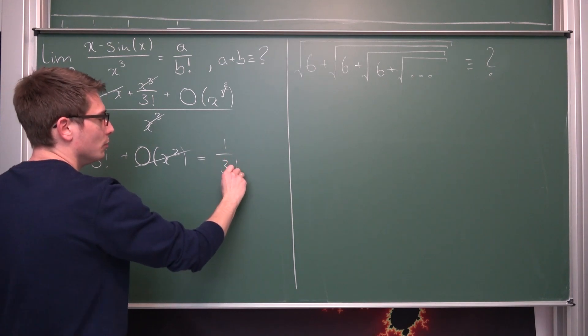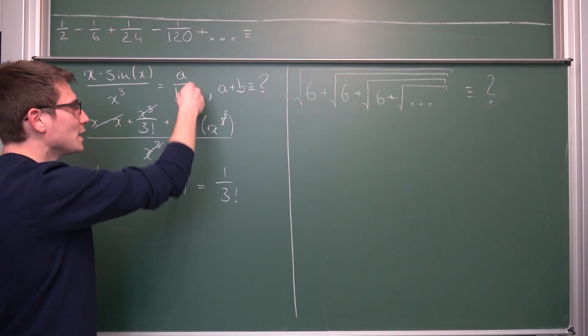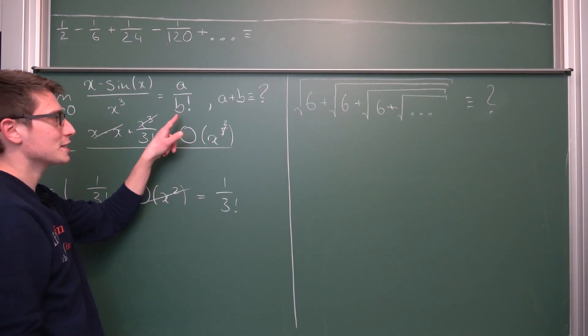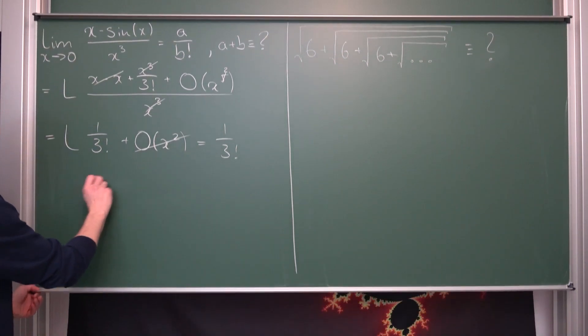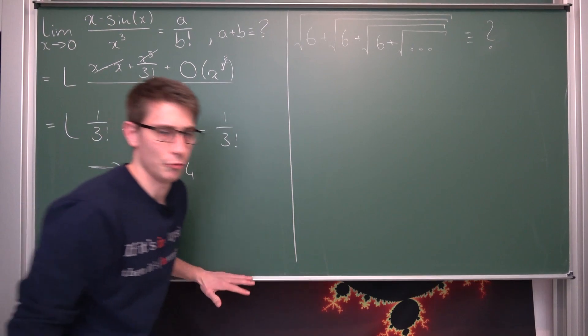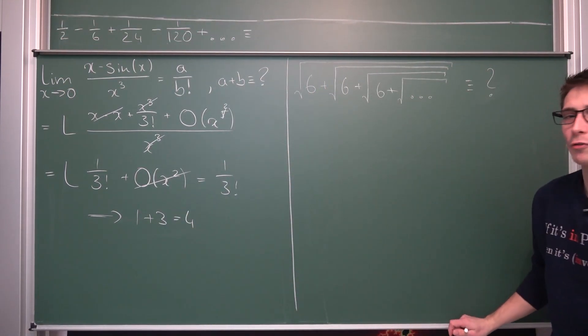Meaning we are going to get 1 over 3 factorial. Now this is of course something of the form a over b factorial. Now we need to find out what a plus b is. Meaning from the b factorial we are just going to take an argument, namely 3. Meaning our answer is 1 plus 3, giving us the successor of 3, overall 4. And this was the first problem. And I hope you were able to figure it out for yourself.